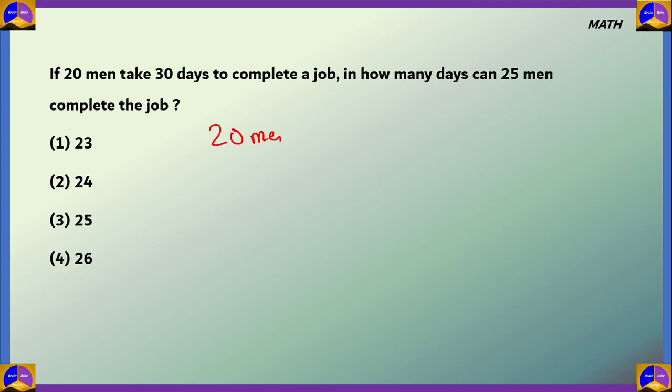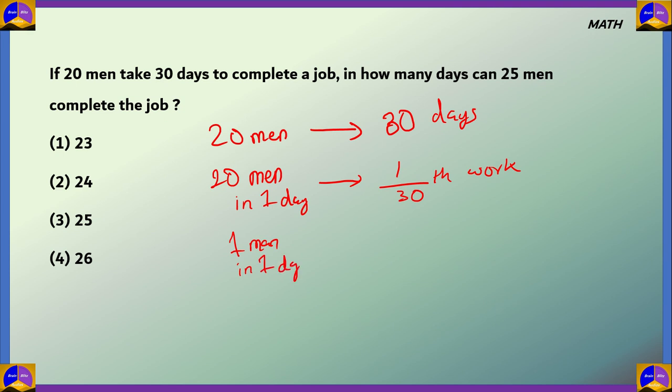Now we know that 20 men would complete the work in 30 days. So what does this mean? This means that 20 men in one day would complete 1 by 30th of the work. So 1 by 30 is the rate of work of 20 men. What if there's only one man? So one man in one day would complete 1 by 30 into 20, which is 1 by 600 of the work. Which means if one man would be doing the job continuously, he would take 600 days, 600 by 1, the reciprocal of this, to complete the work.